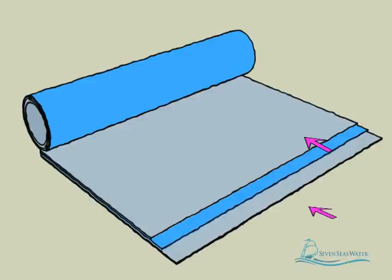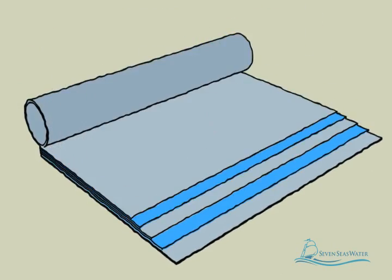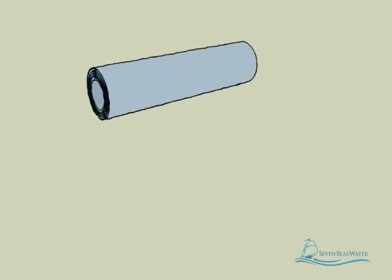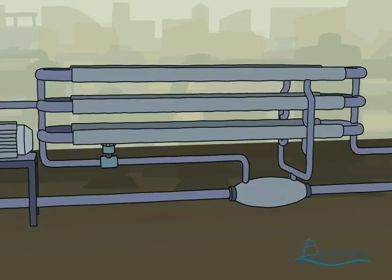The reverse osmosis membrane can be thought of as a number of sealed envelopes connected at their open ends to a tube. There are spacers between each envelope which allow water to flow across the membranes. The membrane envelopes and spacers are then wound around the tube like a roll of paper towels. The reverse osmosis membranes are then enclosed in a fiberglass shell.